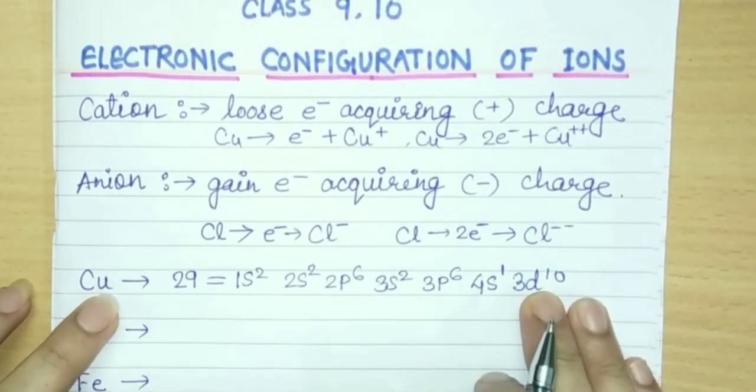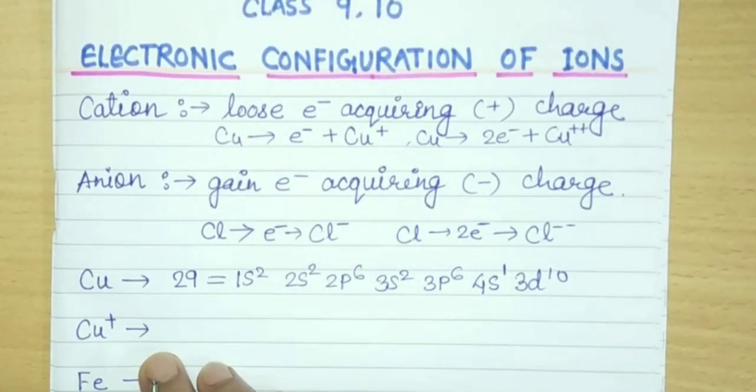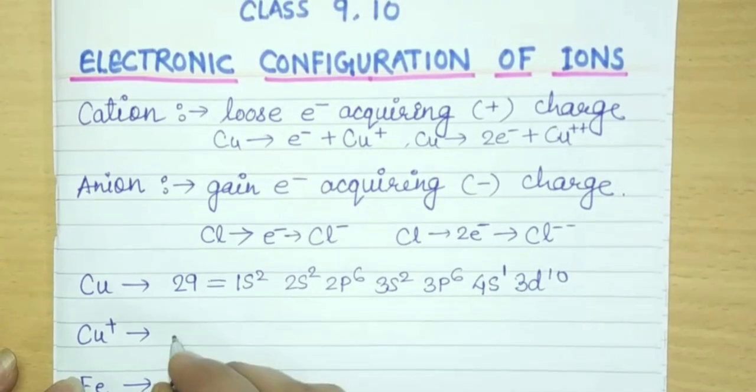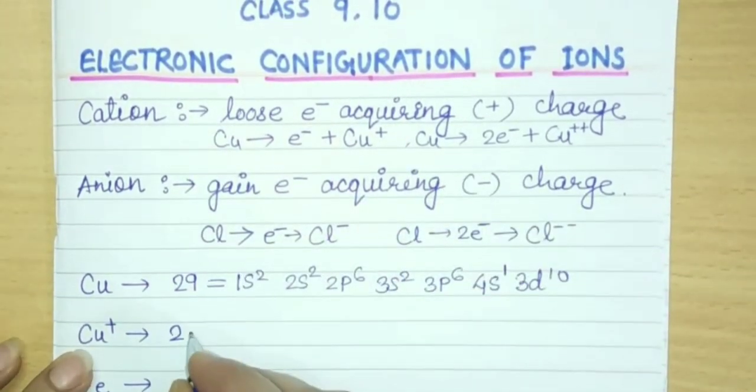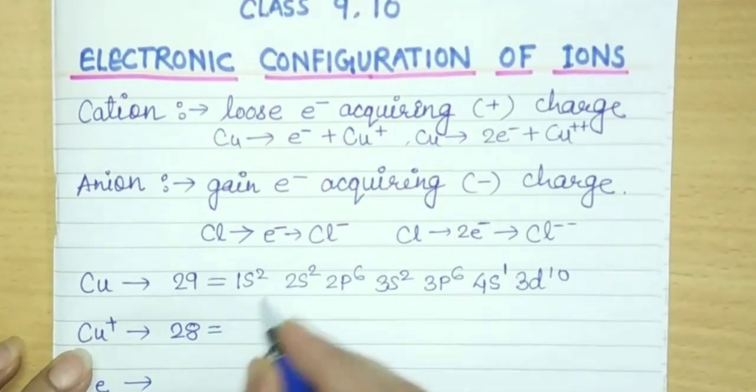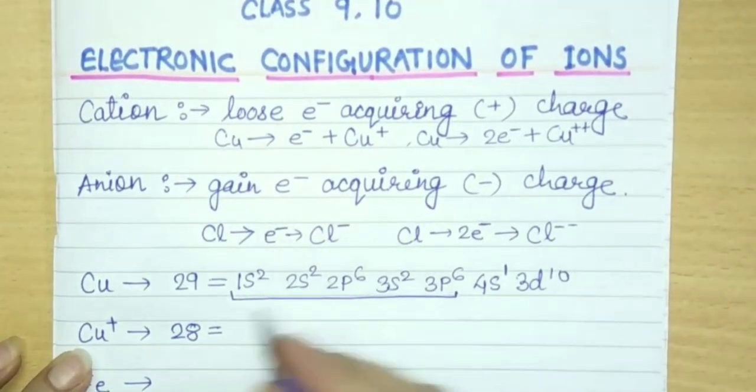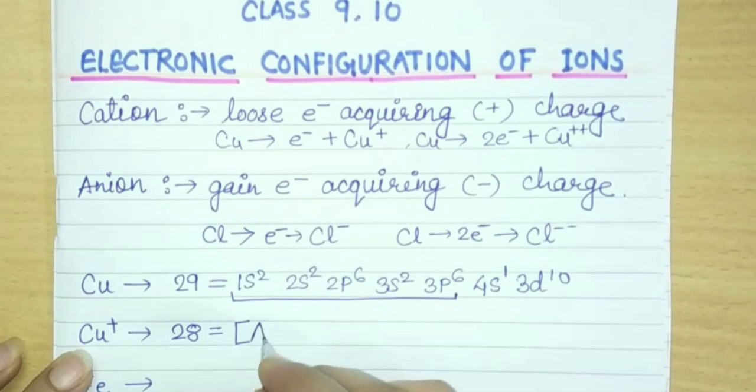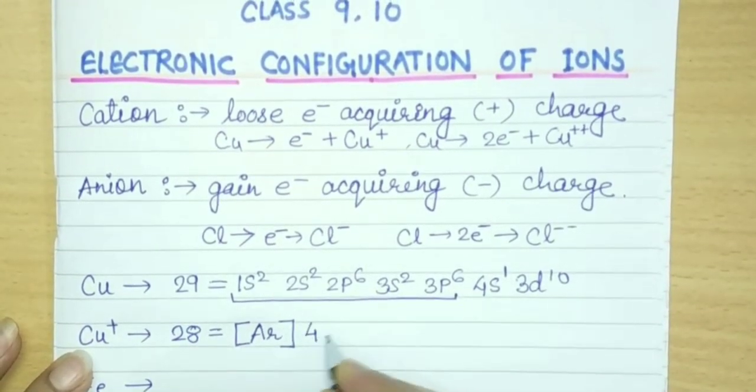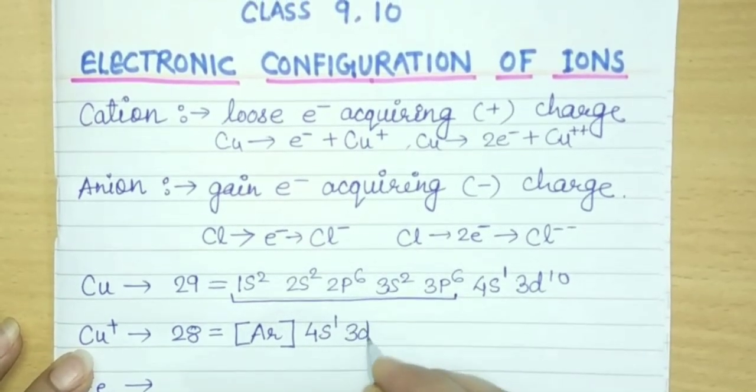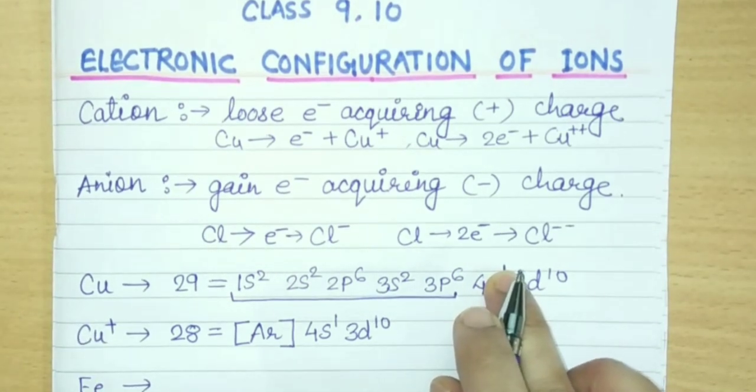Now for copper plus ion, when copper has lost one electron, then its configuration will change. First, atomic number will change. When it has given one electron, its atomic number will become 28. So let's write the electronic configuration. I will write argon here. This is the electronic configuration of argon. After this 4s1 3d10, this was the electronic configuration of Cu.